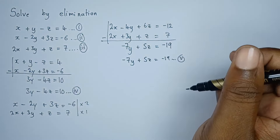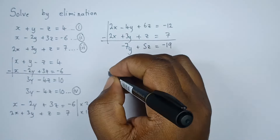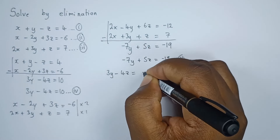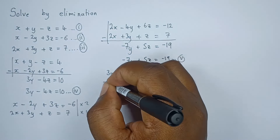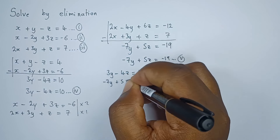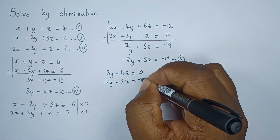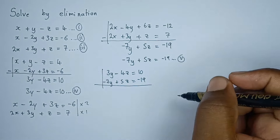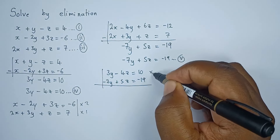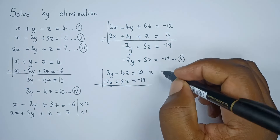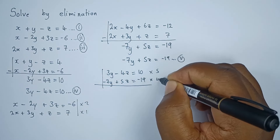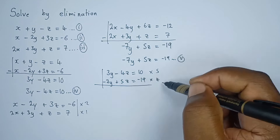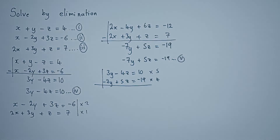Now we solve equations four and five simultaneously using elimination. Equation four is 3y minus 4z equals ten, and equation five is negative seven y plus five z equals negative nineteen. Since there is no common coefficient for z, I'll multiply equation four by five and equation five by four. That gives a coefficient of 20 for z in both equations, so z can be eliminated.